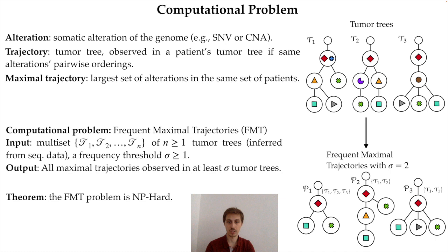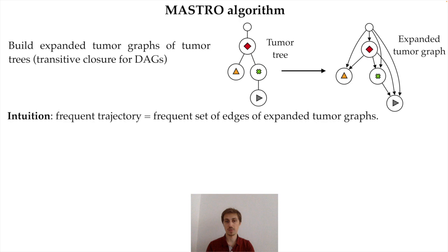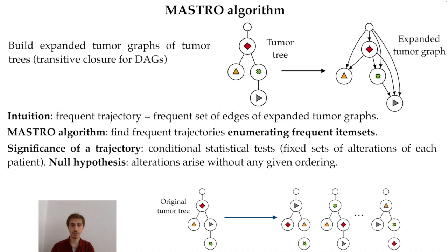In the paper we prove that this problem is NP-hard, so it is unlikely we can solve it efficiently for every instance. We designed a fast algorithm called MASTRO, whose main idea is to expand each tumor tree into a tumor graph by adding additional edges connecting every node to all other nodes reachable from it, as shown in the example. The intuition is that a frequent trajectory corresponds to a frequent set of edges in the expanded tumor graphs. MASTRO finds all frequent trajectories from frequent edge sets by enumerating frequent itemsets, a well-known problem in data mining that can be solved quickly in practice.